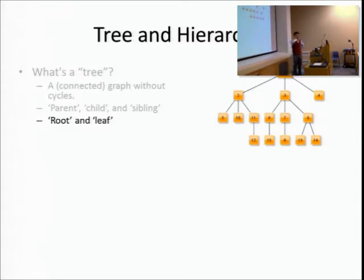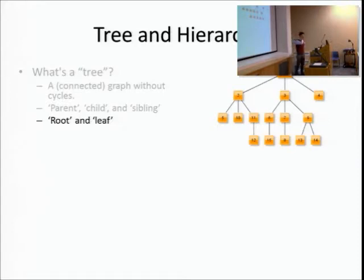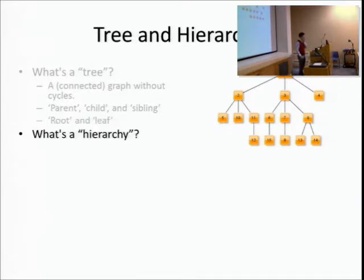Can anyone give me an example of what a leaf might be in this case? Node 5 is a leaf - yes, because it doesn't have any more children. Node 4 is also a leaf.